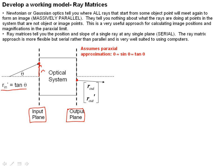And we assume that the angles of propagation, theta, at any point of the system follow the paraxial approximation. So if theta is given in radians, the sine of theta is approximately, the tangent of theta is approximately equal to theta.